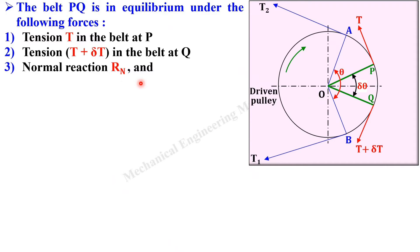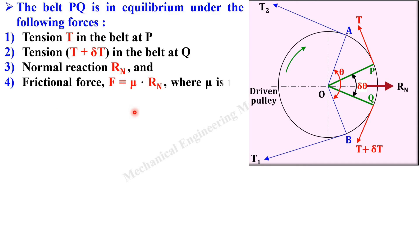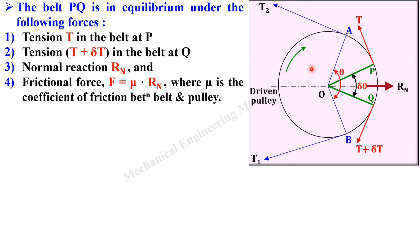The next force is the normal reaction Rn, which is perpendicular to the surface — acting in that direction. The next force is the frictional force, which is always opposite to the direction of the rotating pulley. Since it is rotating in the anticlockwise direction, the frictional force acts in the upper direction and is always perpendicular to the normal reaction, equal to mu times Rn. For equilibrium of PQ, you must consider all four of these forces.